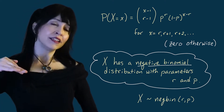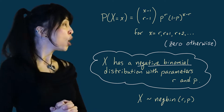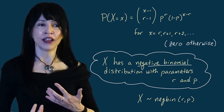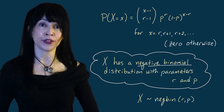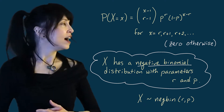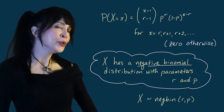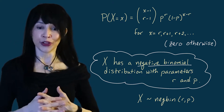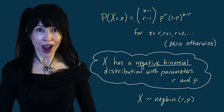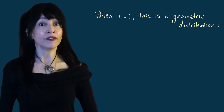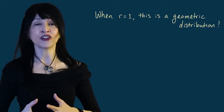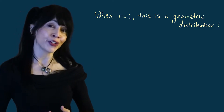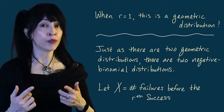One way to write this is X ~ NegBin(r, p). However, I warn you that the negative binomial does not have as standard a notation as our other random variables, so people might write this differently or switch the parameters. Be careful when reading books or online material. Also be careful about which version of the negative binomial you're looking at. We just defined X as the number of trials up to and including the rth success — when r equals one, that is our first geometric distribution. The second version counts the number of failures before the rth success.